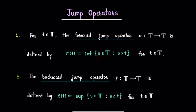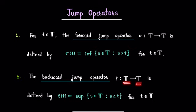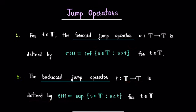On the other hand, the backward jump operator denoted by symbol rho is a function from time scale T to T defined by rho(t) equals the supremum of the set of all elements s in time scale T such that s is strictly less than t.